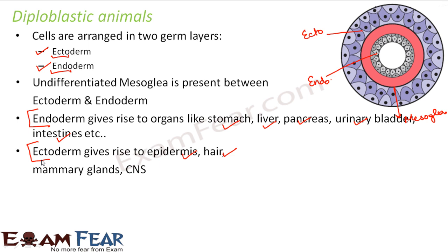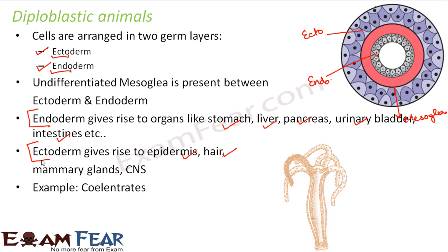So these kinds of animals are known as diploblastic animals. When I started with the basis of classification, I started with the level of organization — whether it is cellular, tissue, organ, or organ system level. Then we spoke about symmetry, which is about the external appearance of an animal. Now we are talking about the internal formation of that animal — we went back to its embryonic stage. Animals which have two germ layers are known as diploblastic animals. Examples are cnidarians like Hydra.